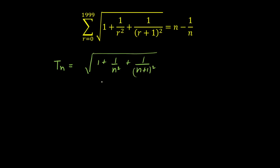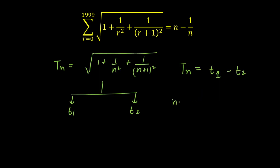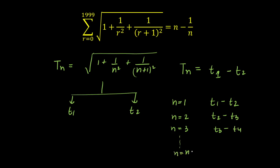I'm going to break this term into two parts, t1 and t2, such that T(n) equals t1 minus t2 — a difference of two parts. The idea is: when we put n equal to 1, we get t1 minus t2; when n equals 2, we get t2 minus t3; when n equals 3, we get t3 minus t4; and for general n, we get t(n) minus t(n+1).